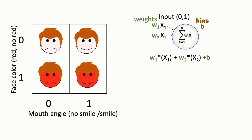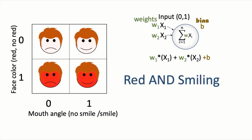If we have an AND situation that predicts a bluff — for example, red AND smiling — this corresponds to the data point in the lower right-hand corner in this picture. The perceptron would find weight values corresponding to this division between truth and bluff, so that only red AND smiling would predict a bluff.